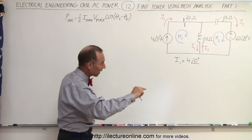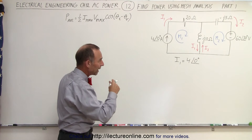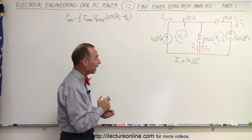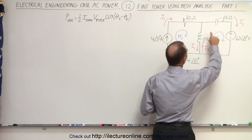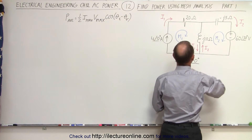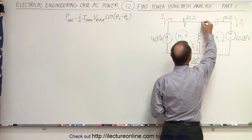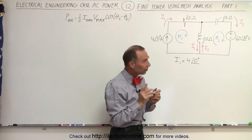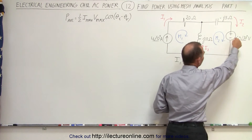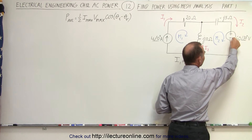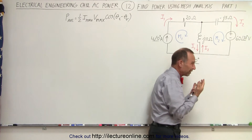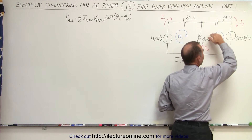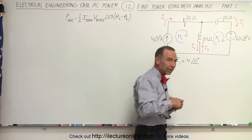What about I2? For that we have to go around mesh two, add up all the voltage rises and drops, and figure out what I2 is equal to. We're first going to go across the capacitor — let's make this our starting point. Going across the capacitor in the same direction as the current. Notice that the voltage supply has the positive on this side and the negative on this side, which means the current probably flows counterclockwise.